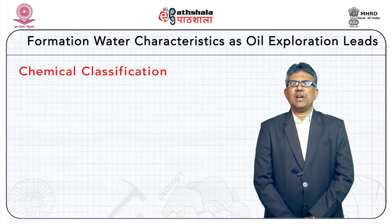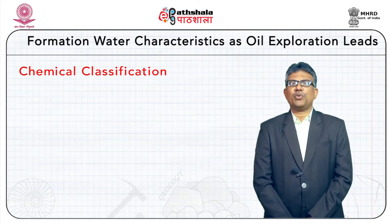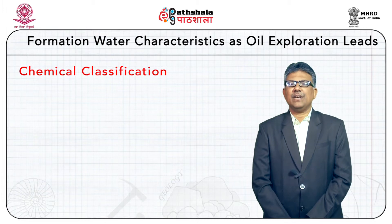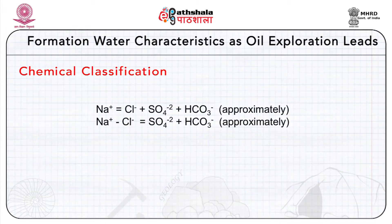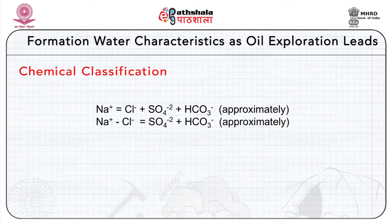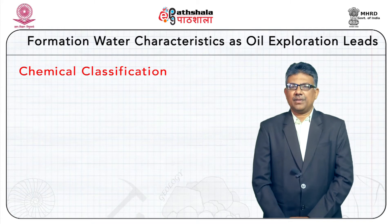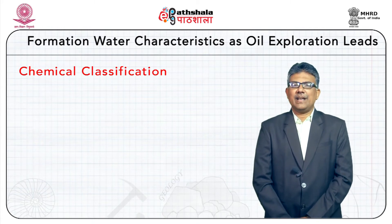If sodium is assumed to be the only cation present, then the sum of equivalent percentages of anions must nearly equal sodium: Na ≈ Cl + SO₄ + HCO₃. Subtracting chloride from sodium gives the equivalent of sulfate and bicarbonate. Hence, the ratio (Na − Cl)/SO₄: if less than one, waters are classified as Type A — sodium sulfate; if greater than one, as Type B — bicarbonate-sodium. In both meteoric water cases, the Na/Cl ratio is more than one.